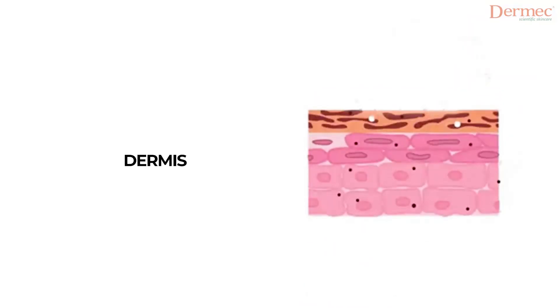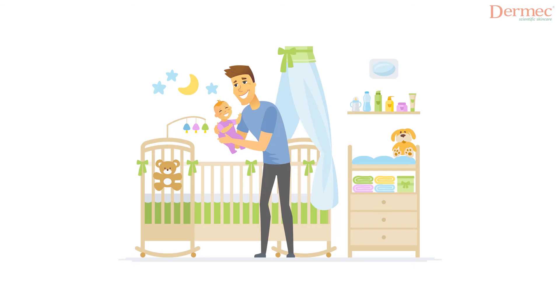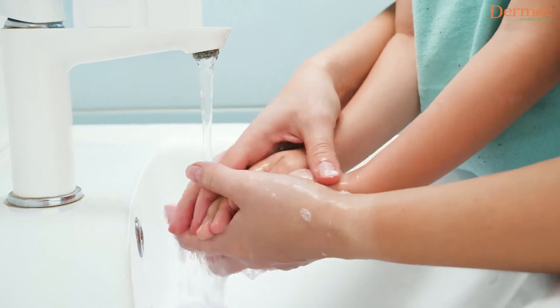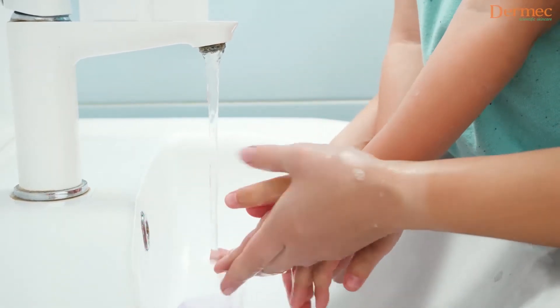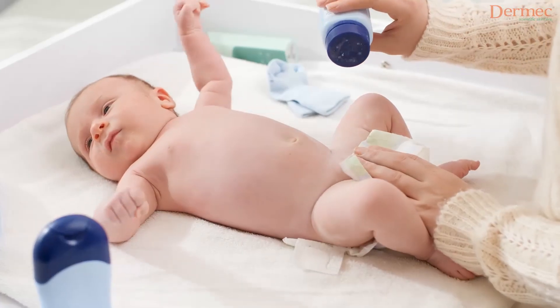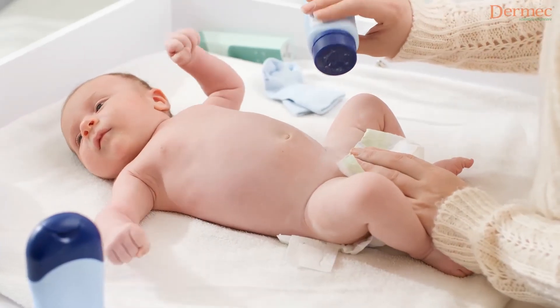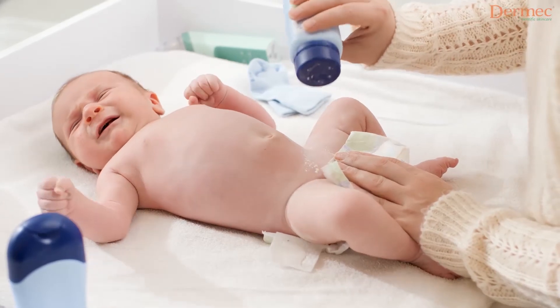In babies, the dermis — the skin layer that protects the body from mechanical stress and temperature change — is much thinner than in normal adults. This makes the baby's skin less resilient. Infant skin is more susceptible to infection because the defense mechanism to protect itself from certain bacteria and other pathogens is not fully developed in babies.